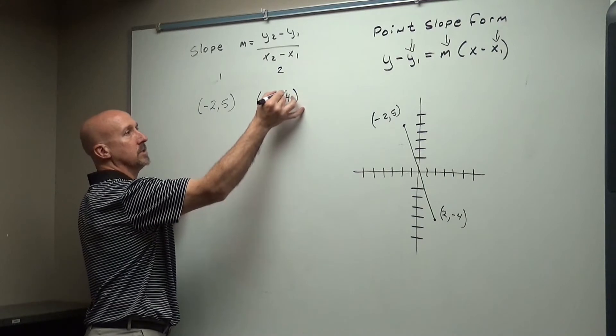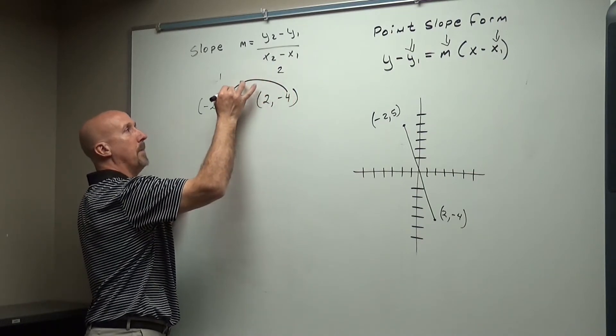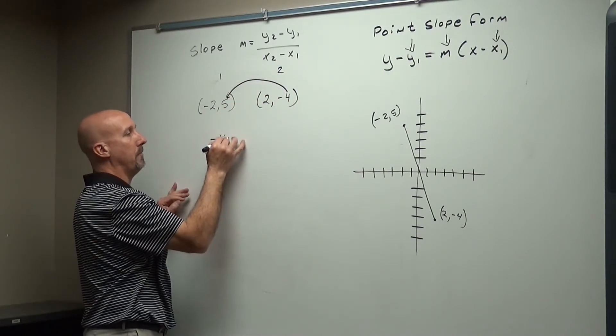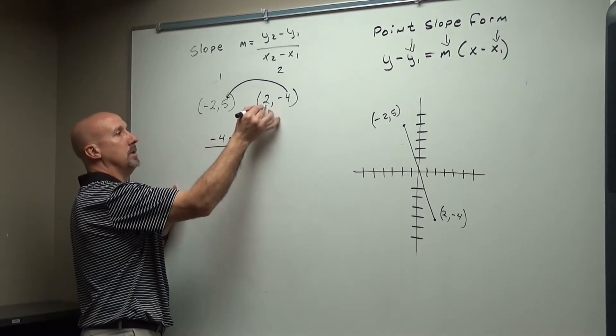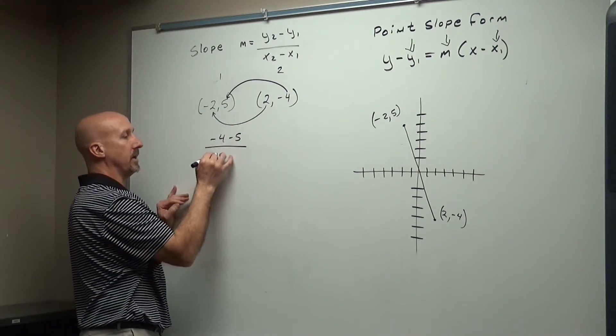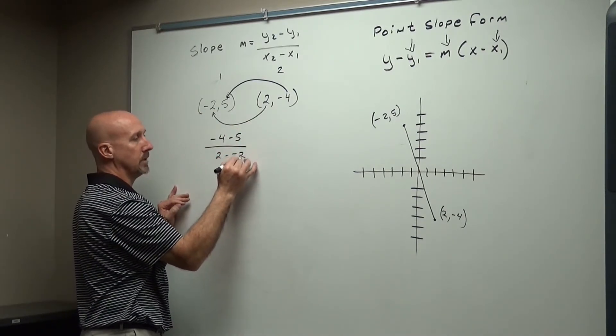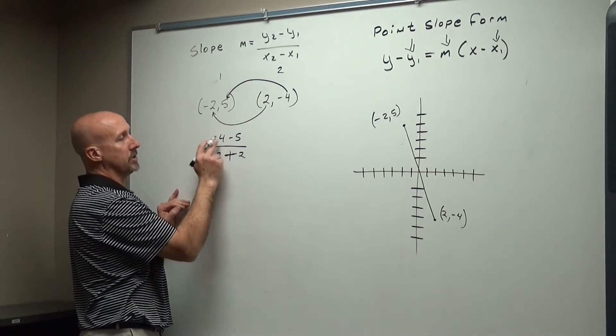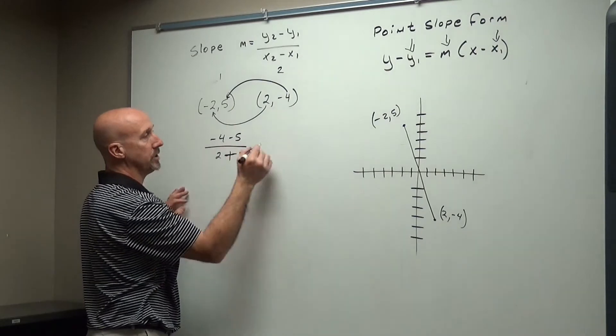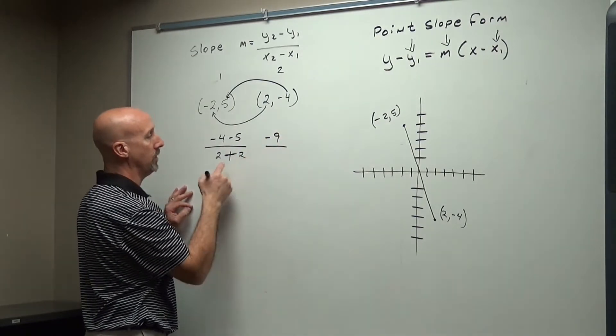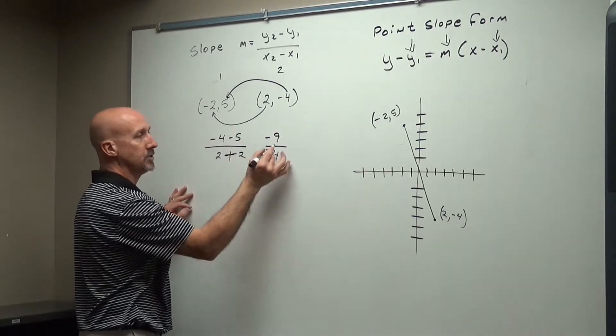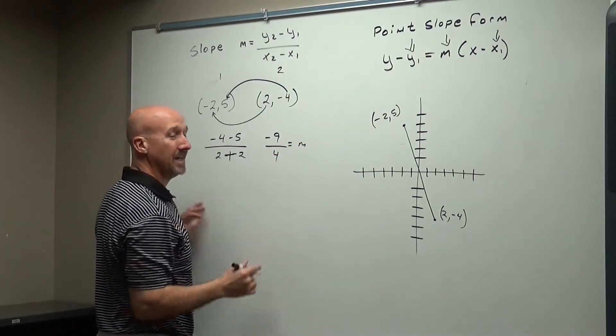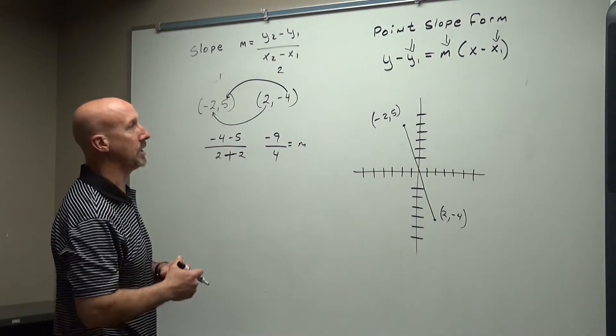So obviously this is my y2 minus y1. So negative 4 minus 5 over 2 minus negative 2. Okay, two negatives give me a positive here. These are the same signs, so I'm going to add them and use their sign. So I get negative 9 over 2 plus 2 is 4. So this is my slope. And again, it's a fraction this time, so it's going to make it a little bit harder for us.